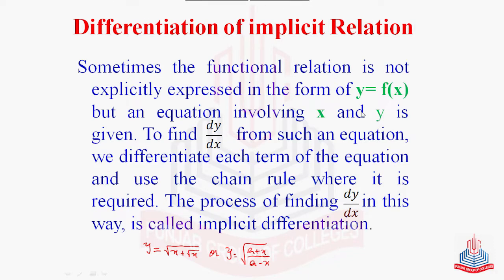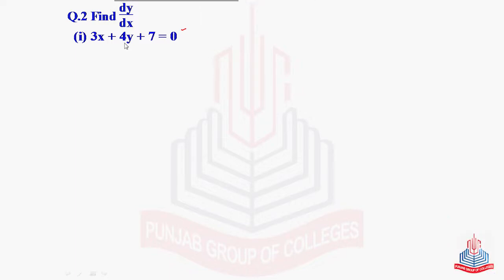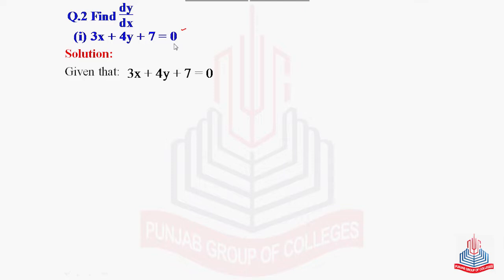We will explain the process of finding dy/dx of an implicit relation using question number 2. Part one: find dy/dx for 3x + 4y + 7 = 0. This is an easy example of implicit differentiation where y is not explicitly defined in terms of x. Given: 3x + 4y + 7 = 0.